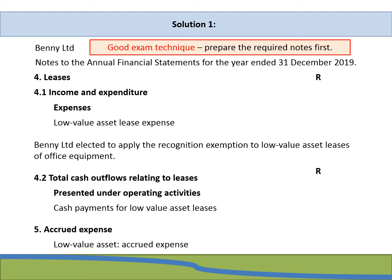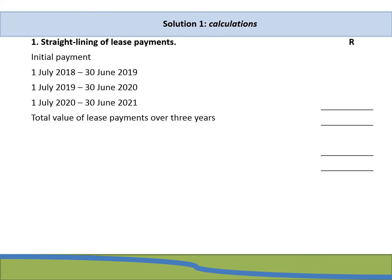The required states that we need to disclose the lease transaction in the notes to the annual financial statements of Benny Limited. As good exam technique, it is useful to write out the layout of the notes first so that once you have calculated the amounts, you can transfer them across. Very important: the required states that comparative figures are not required. If not mentioned in a question, it means you will need to disclose both current and prior year figures.